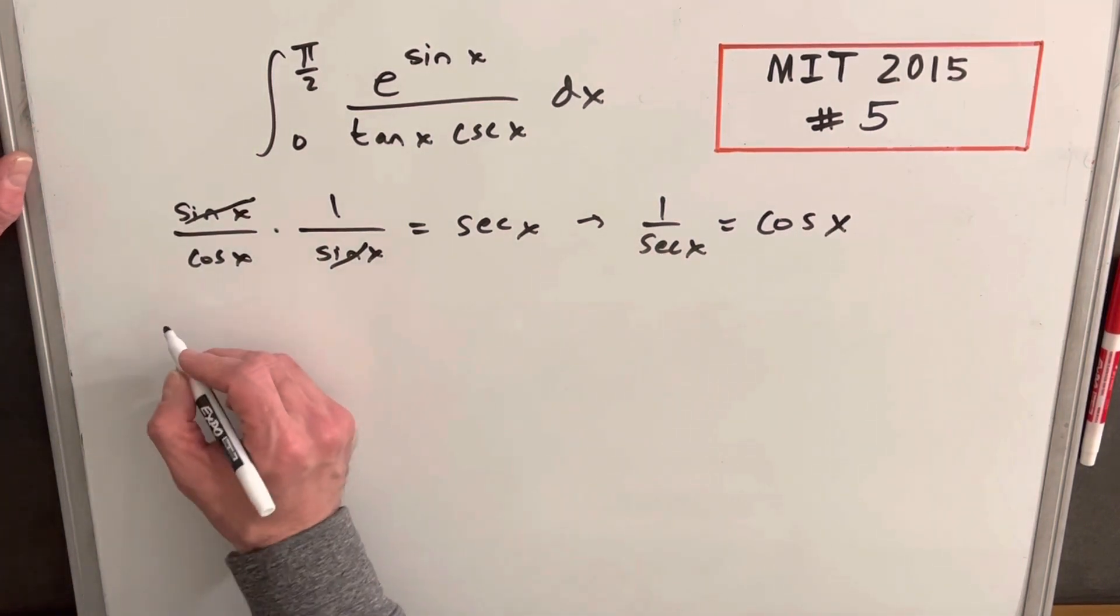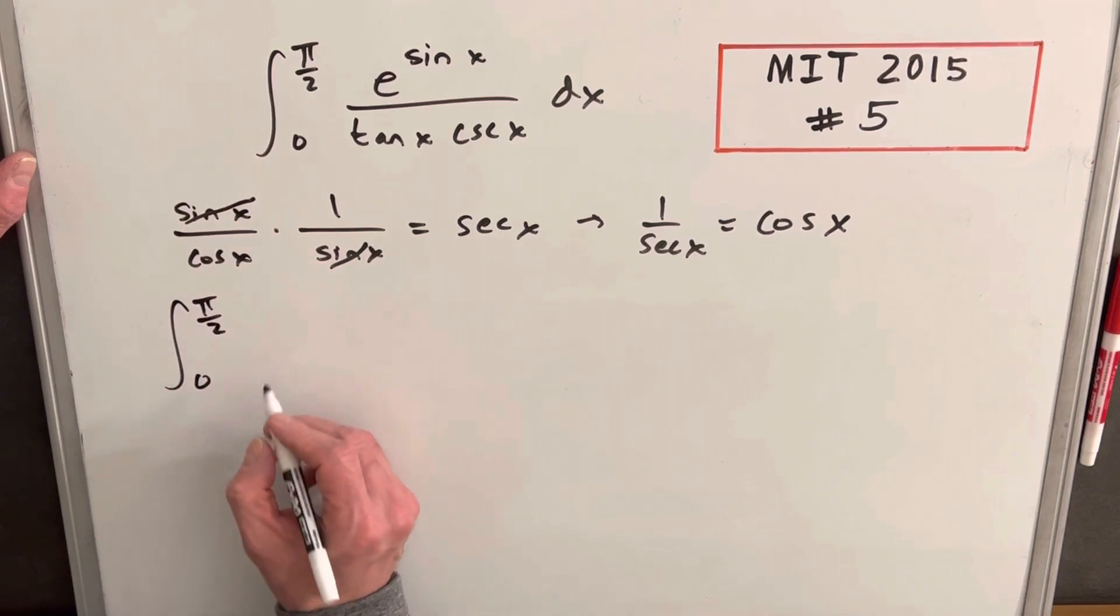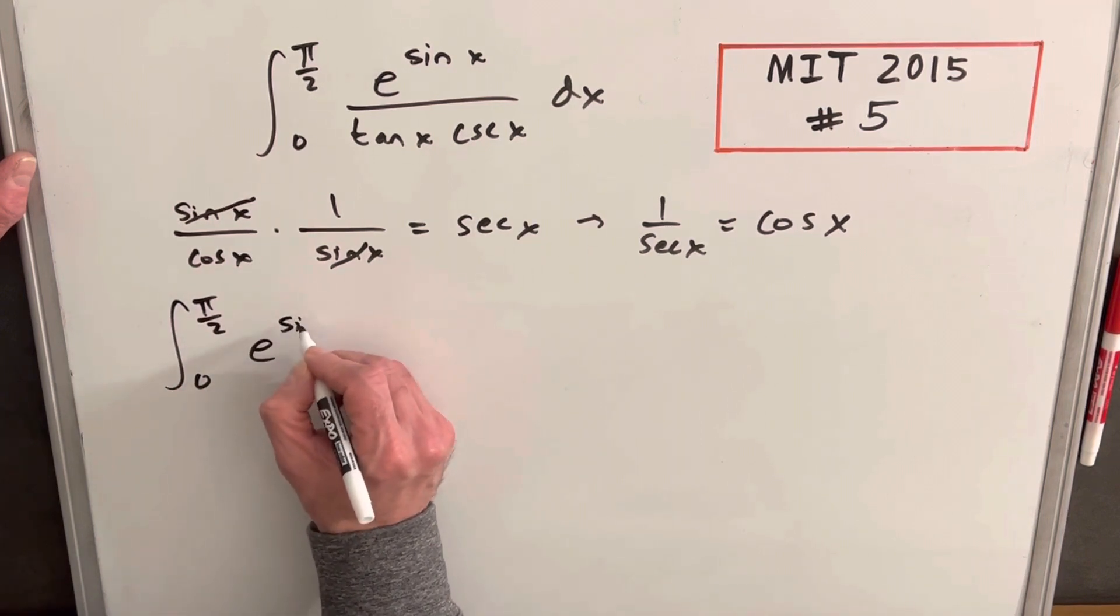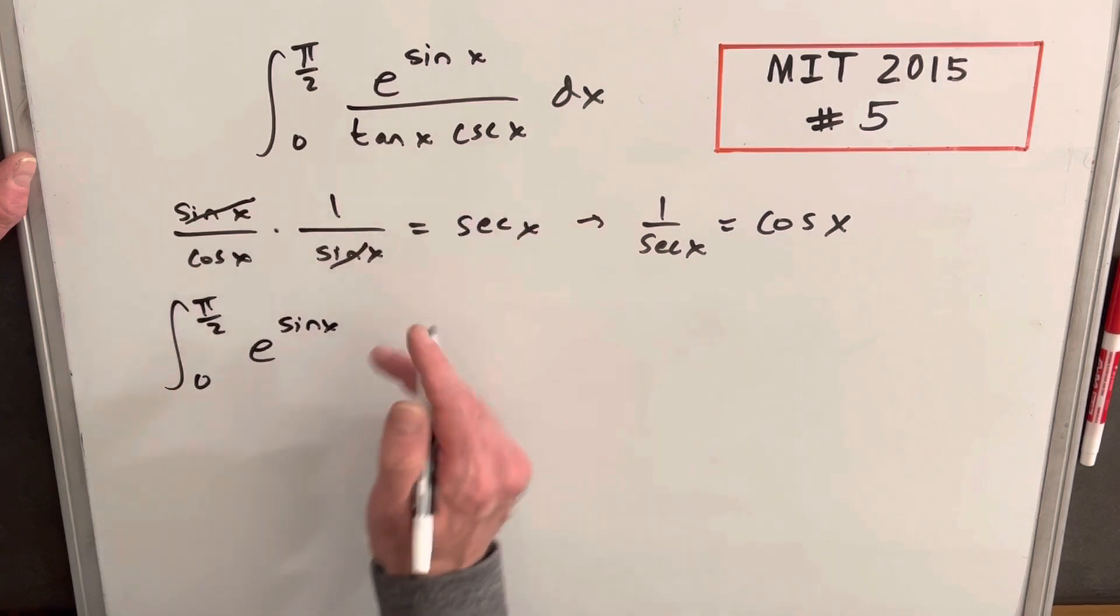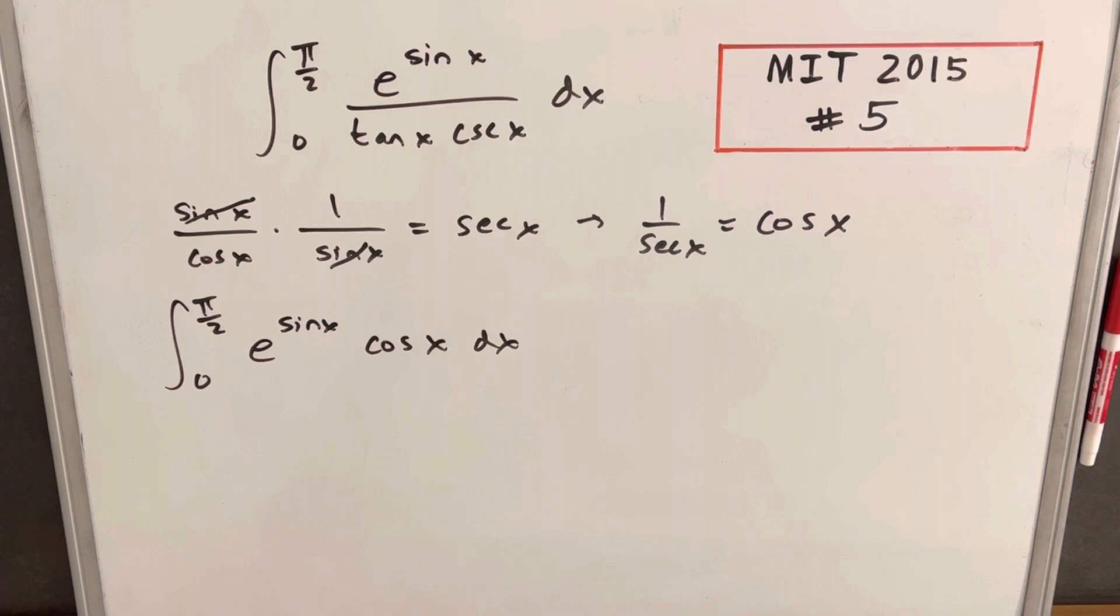I think that's going to help us out a lot. So let's just rewrite this whole thing with this simplification in mind. So we're going to have e to the sine x, and then I'm taking my whole denominator and writing it as just cosine x and then a dx on the end. But like I said initially, we really don't like sine x in the exponent.